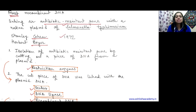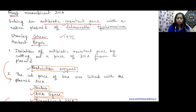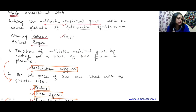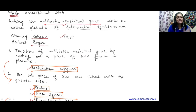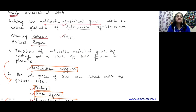Restriction enzymes are particular enzymes which can cut the DNA. They are also called molecular scissors. What do we have to do first? We have to get our gene of interest. So we have to isolate it - isolation of the antibiotic-resistant gene by cutting out a piece of DNA from a plasmid.